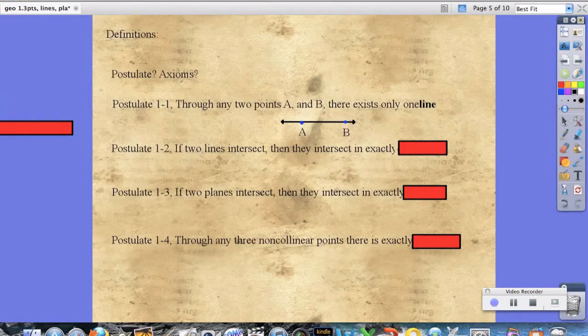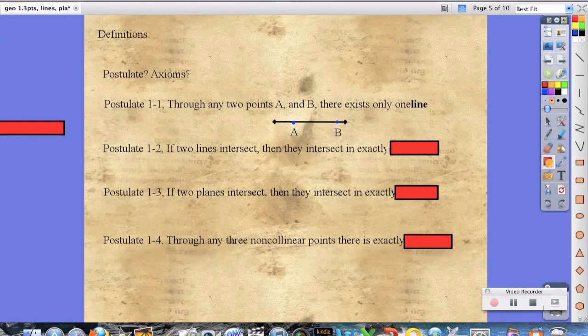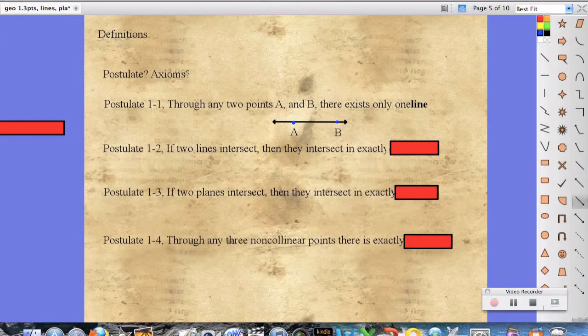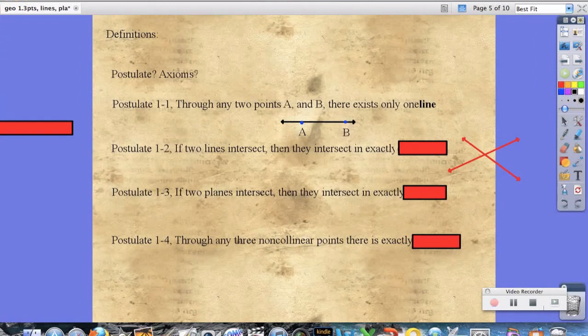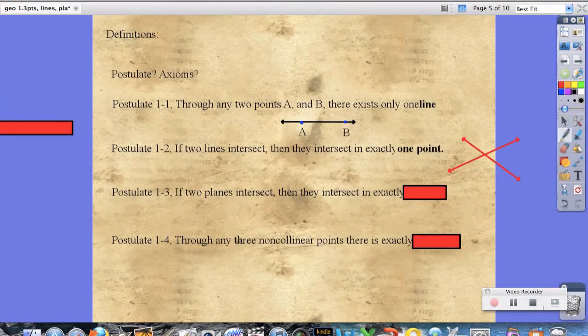Postulate 1-2 states if two lines intersect, then they intersect in exactly one point. So here are two lines, and they're going to intersect. So they can intersect in exactly one point. Because our straight lines can't curve, so they can only literally intersect at this point here.